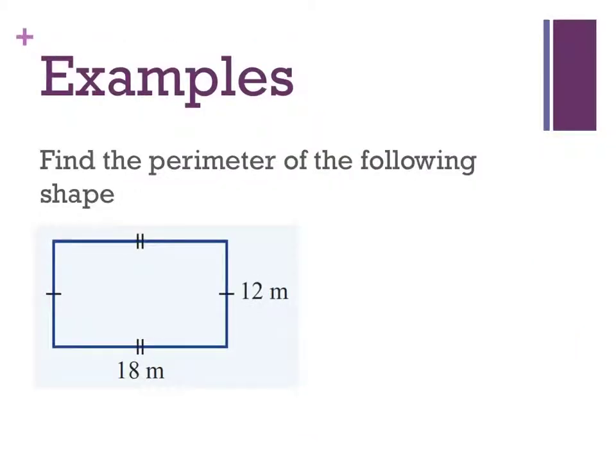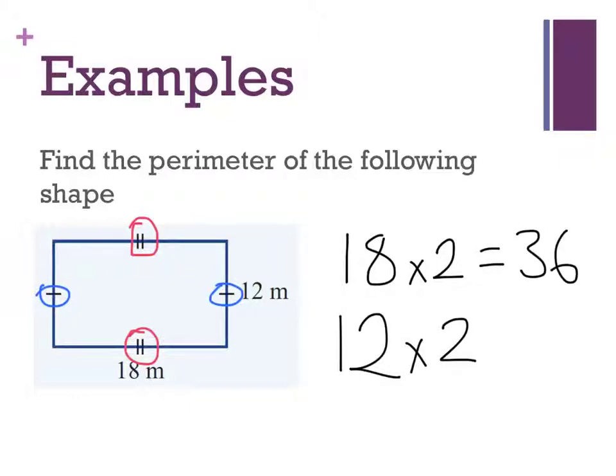So let's have a look at an example. Lines with the same markings are of equal distance. So I know that this is a rectangle, which means that I have two sides, vertically opposite of which are equal. So this is 18 metres here, and I have two lines on it and two lines on this, so that must mean I've got two sides that are 18 metres, and then I've got this one here, 12 metres, this one here opposite, also 12. So 12 times 2, 18 times 2 equals 36. 12 times 2 equals 24, which must mean my perimeter is 36 plus 24, 60 metres.